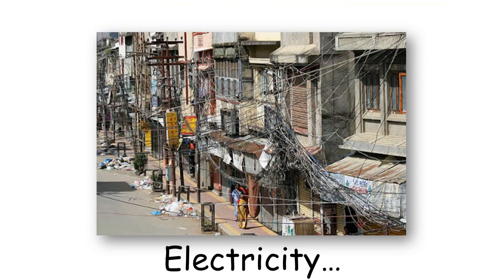However, in some areas the shantytowns are improving. This photo shows Dharavi in Mumbai where, in this circumstance, the government has provided electricity to help the people.